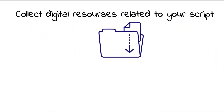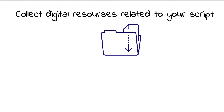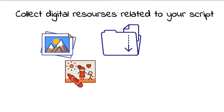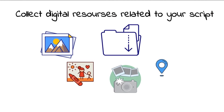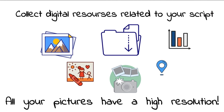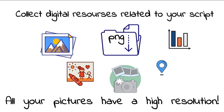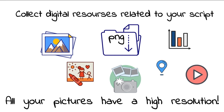Tip 5: Collect digital resources related to your script. Search for or create images that can be used in your story, including pictures, drawings, photographs, maps or charts. Make sure that all your pictures have a high resolution — it is better to use PNG than JPEG format. If you plan to use video clips, try to find or shoot short clips or sound effects that will highlight the theme of your story.